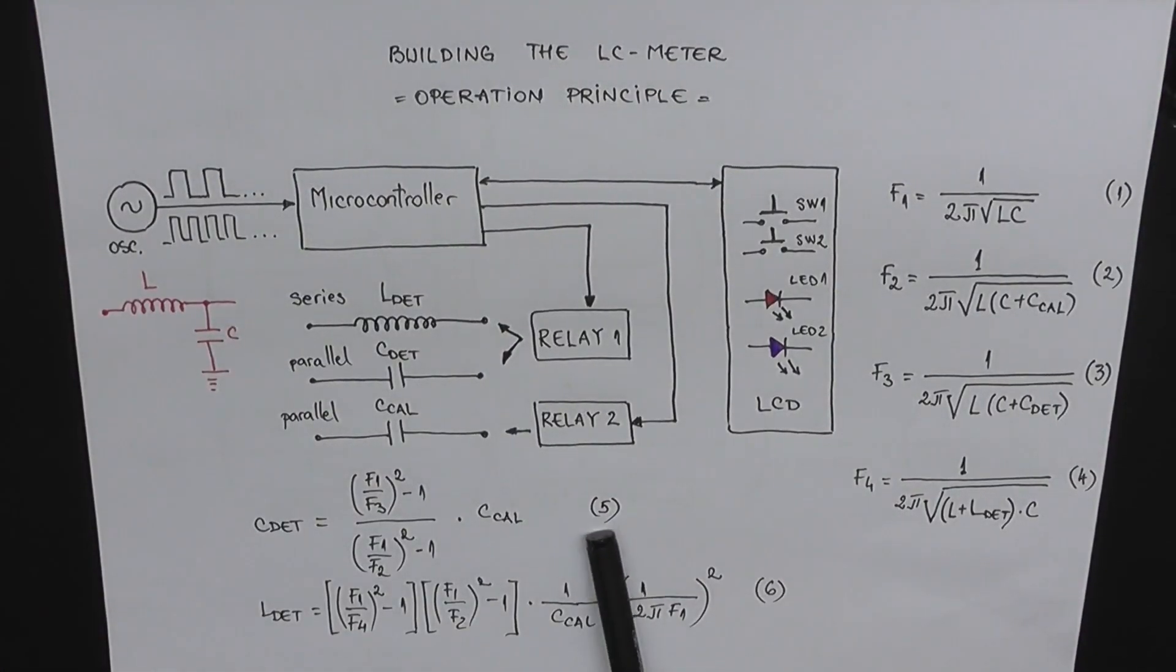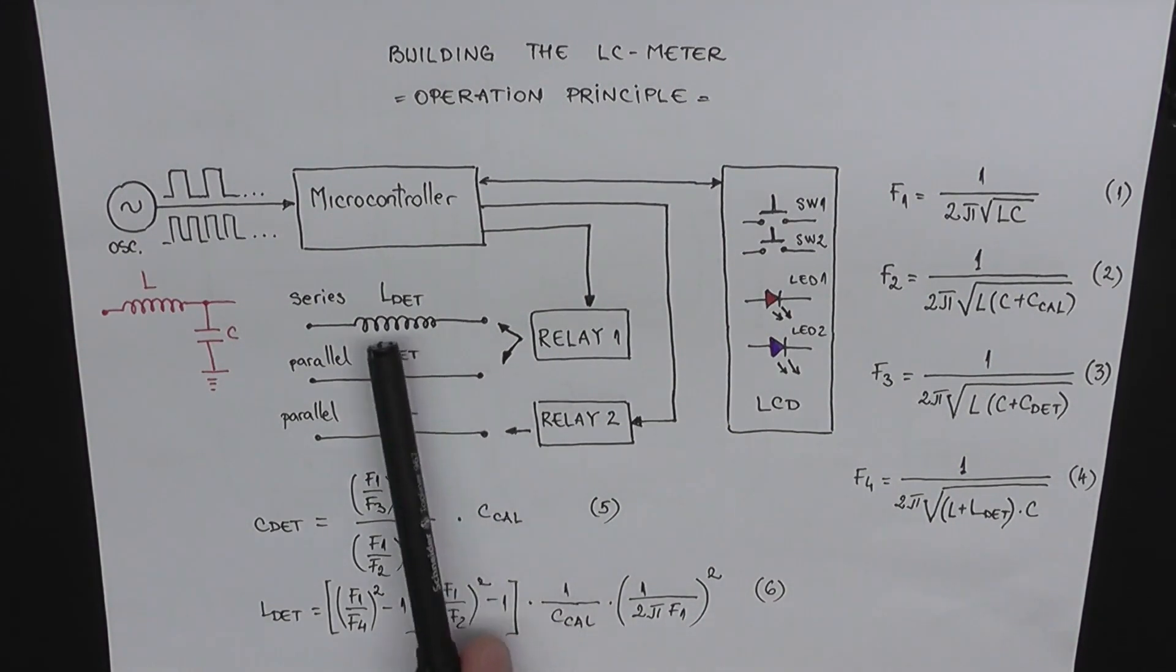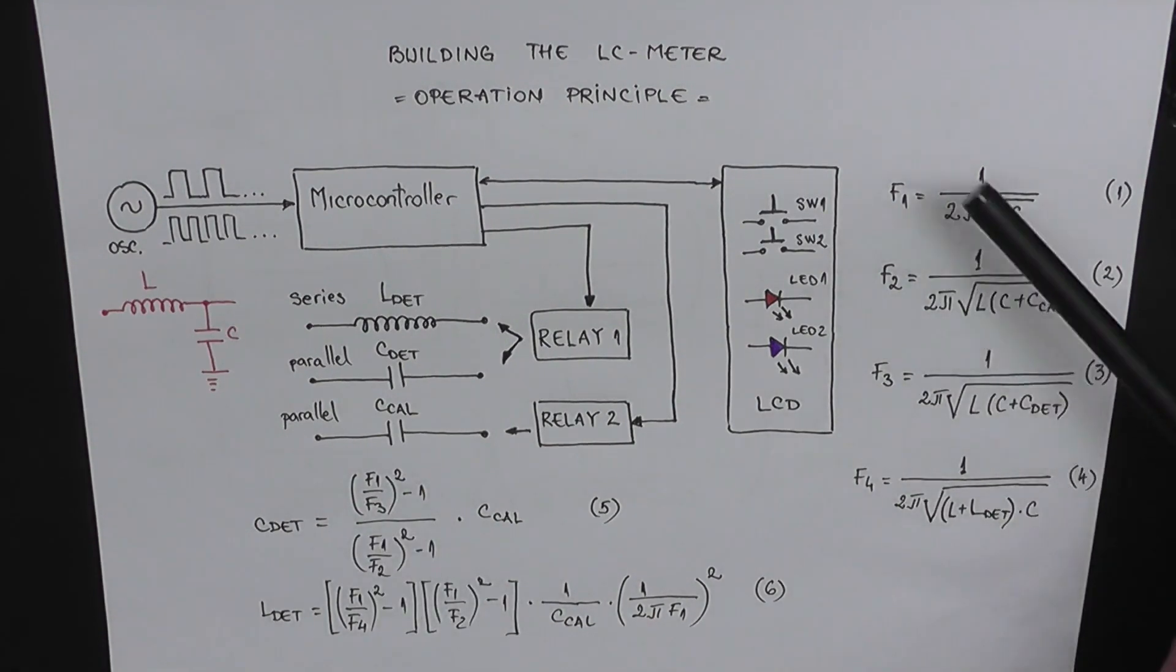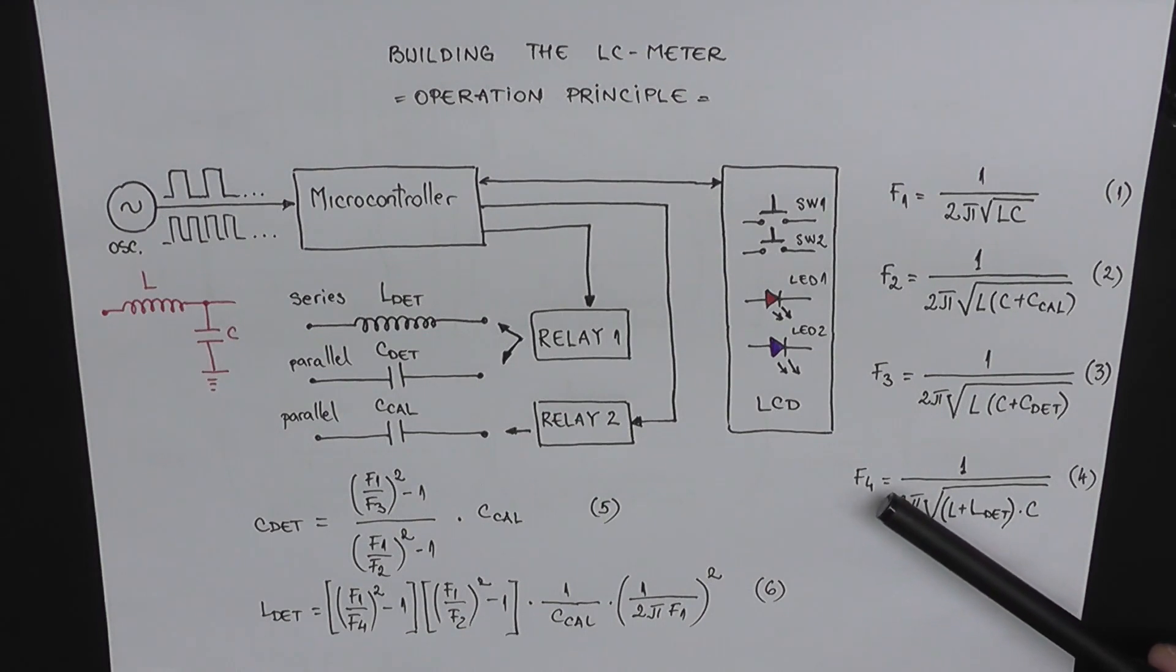And now that we prove that these two equations here are correct, all that we need in order to calculate the value of an inductor or a capacitor which we measure is the value for this calibration capacitor right here and the values for these frequencies which are measured in different instances. And now let's go ahead and write all this into an algorithm.